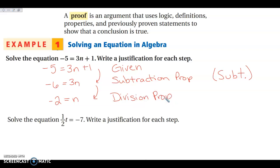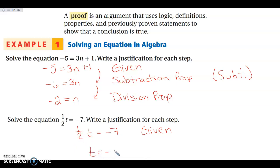Same thing here — the equation is given. We're going to start by multiplying both sides by 2, which cancels out the fraction on the left. Negative 7 times 2 is negative 14. So what did I do? I multiplied both sides by 2 — that was my multiplication property.